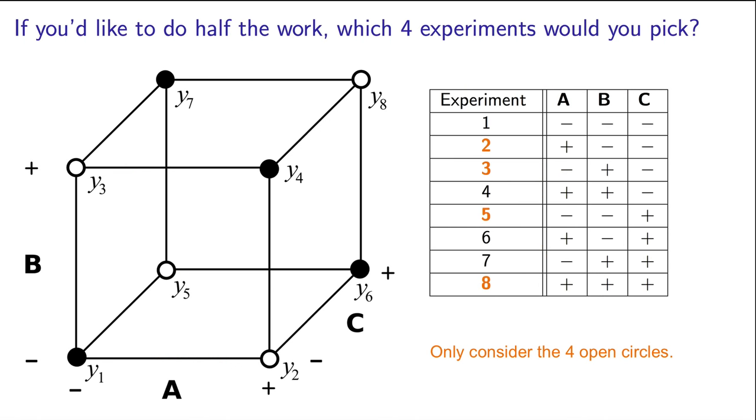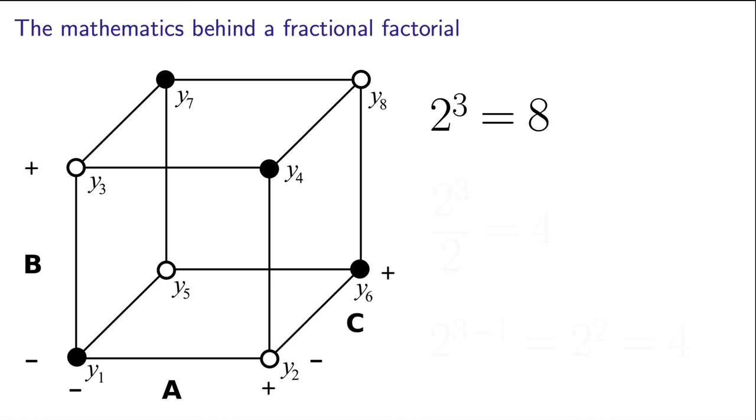We call this a half fraction. The full set of experiments for 3 factors would have required 2 to the 3 experiments. If we want to do half the work, then we can divide by 2 here, which is equal to 4. Or for those of you that remember your exponent rules, we could write this as 2 to the power of 3 minus 1. This equals 2 to the power of 2, which equals 4. There is a systematic way to select those 4 runs.